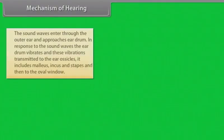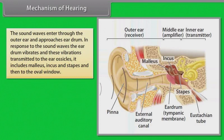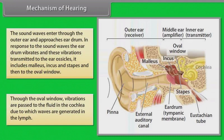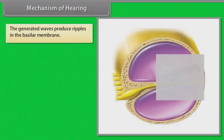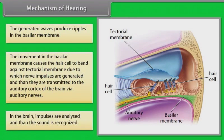Sound waves enter through the outer ear and reach the eardrum. The eardrum vibrates and these vibrations are transmitted to the ear ossicles — malleus, incus, and stapes — and then to the oval window. Vibrations pass to the fluid in the cochlea, generating waves in the lymph. These waves produce ripples in the basilar membrane, causing hair cells to bend against the tectorial membrane, generating nerve impulses. The impulses are transmitted to the auditory cortex of the brain via auditory nerves, where sound is recognized.